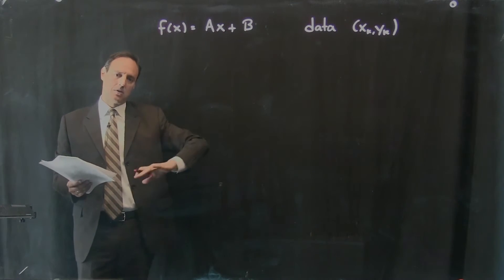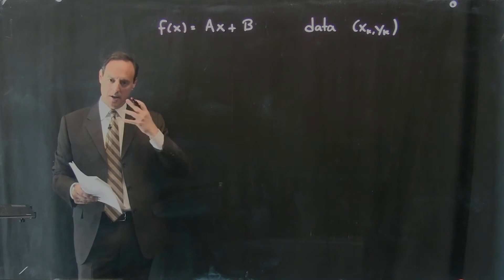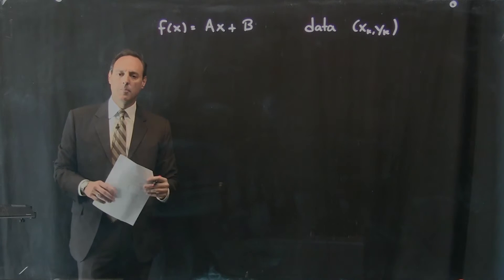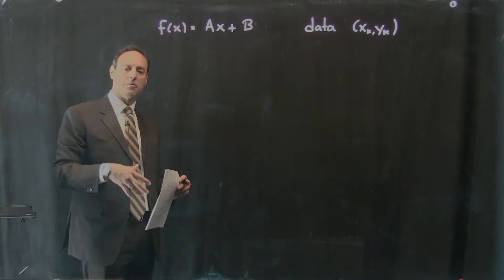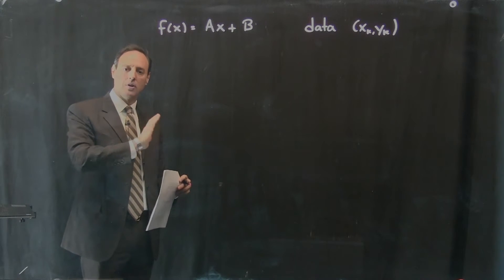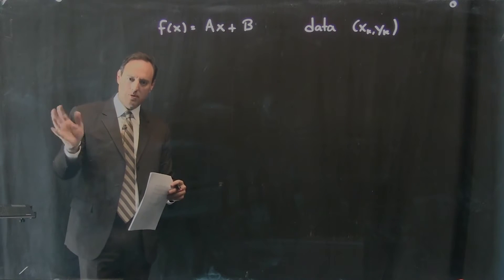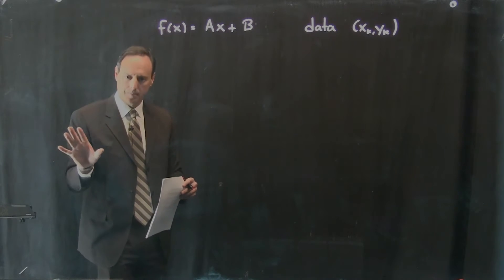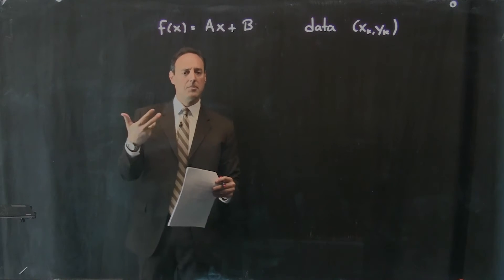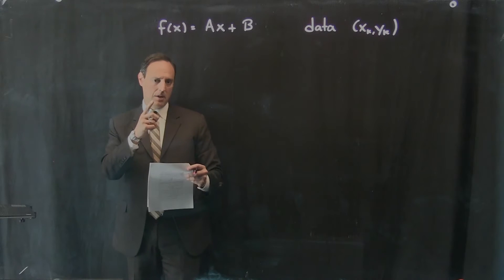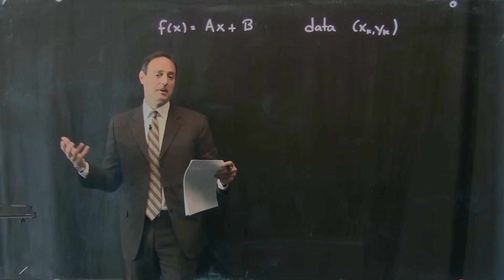When I drew that last line, I was just using an eyeball metric. I was saying this looks like a pretty good line through there. But what you'd really like to do is find the best line through the data, where best means you're relating it to some quantity that's mathematical. So there's going to be an optimization procedure, finding the best A and B through your data that minimizes some error.